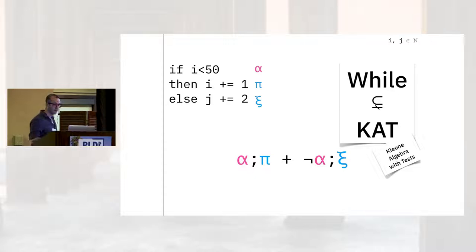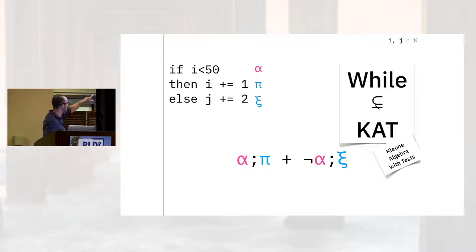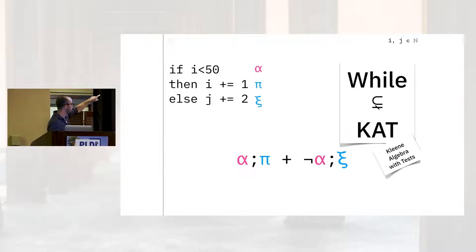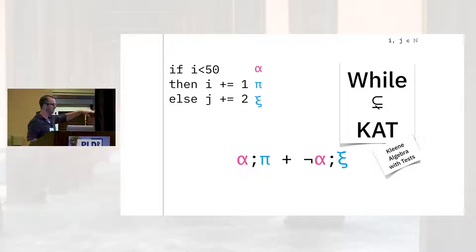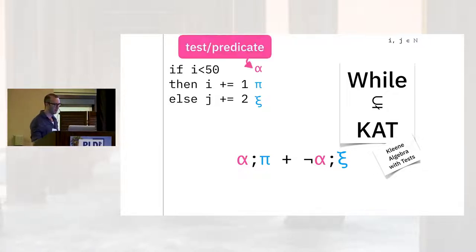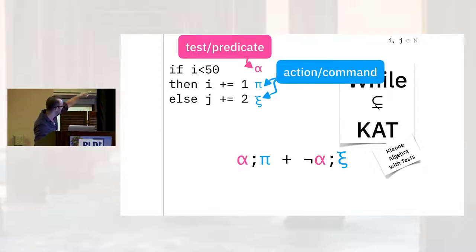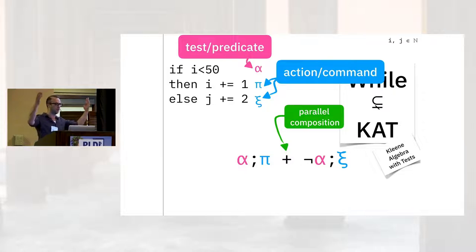We can encode that into KAT by assigning some Greek letters to the various forms. So we'll say i less than 50 is alpha, i plus equals 1 is pi, and j plus equals 2 is psi. We can encode this into Kleene algebra with tests, which is an algebraic framework, using some operators. Alpha is a test or predicate; pi and psi are actions or commands. Parallel composition says do both things at once.